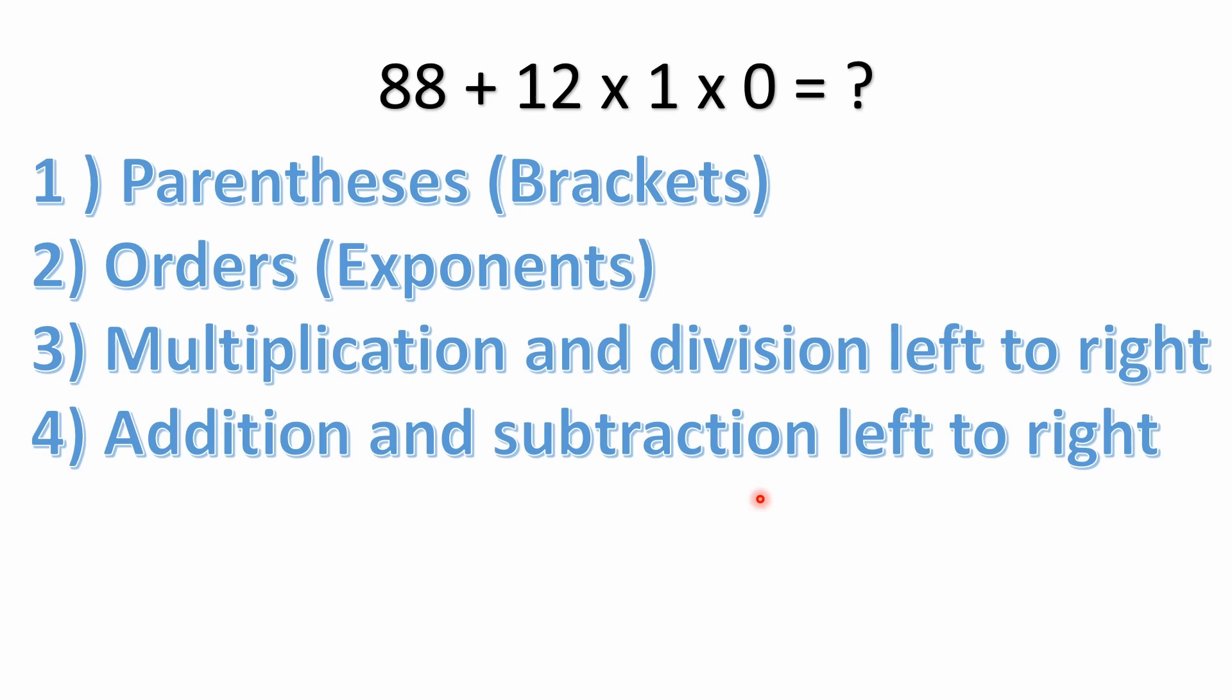Just remember that multiplication and division have equal precedence. Division is really the same operation as multiplication - division is just multiplying by a reciprocal. And then addition and subtraction would be your fourth step. Subtraction is just the addition of a negative number, so addition and subtraction are basically the same operation. They have equal precedence and are solved left to right.